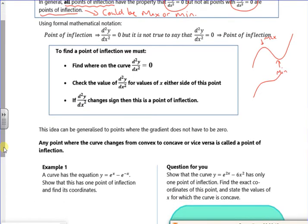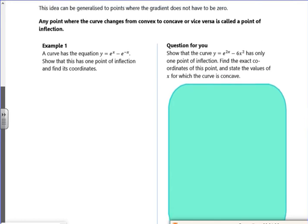So there's a plan. Find where d²y/dx² = 0, check the value on either side of it, and if it changes, it tells us it's a point of inflection. That's our plan. So let's have a go.